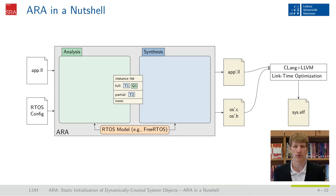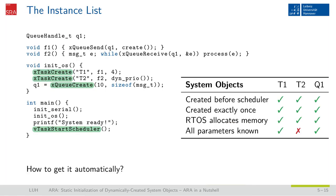Let's have a look into the analysis. Before we dig in, we have to define the desired results we expect the analysis to deliver. The instance list, which is the central part of ARA and the central point for storing information about our system objects, is what we want to construct during the analysis phase. If we take a look inside the application source code, for us as humans it's quite obvious that this application uses two threads and a single queue. Furthermore, we see that all parameters except the priority of task T2 are known at compile time.